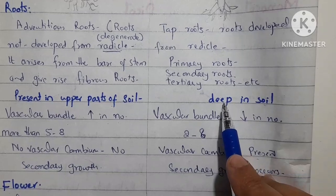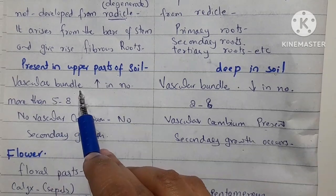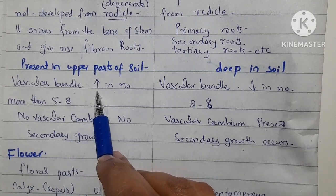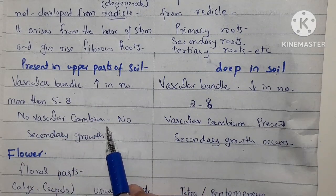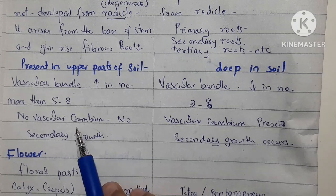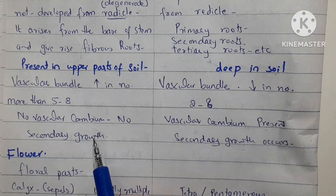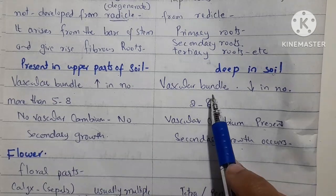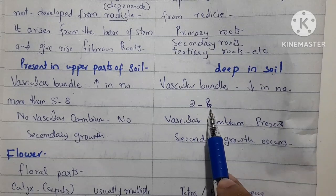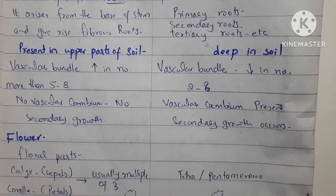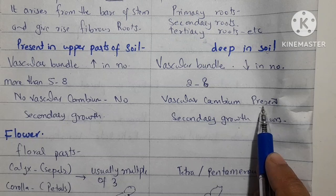In the vascular bundles of monocot roots, there is no vascular cambium, so like the monocot stem, monocot roots do not show secondary growth. In the case of dicot roots, the number of vascular bundles is between 2 to 8, and because vascular cambium is available within the xylem and phloem, the dicot root also shows secondary growth, increasing in width just as the dicot stem does.